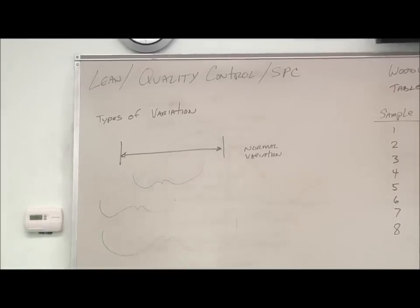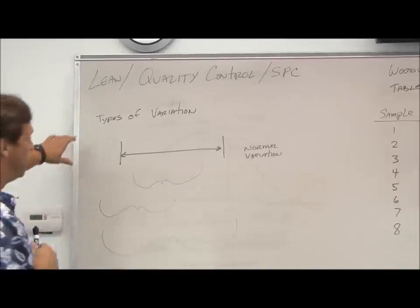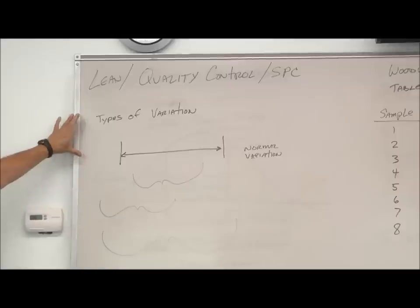Now we're going to look at quality control and SPC. With anything we produce, there's always some type of variation. No matter how accurate we are, they could always be slightly different.